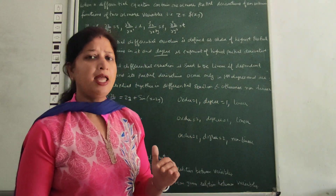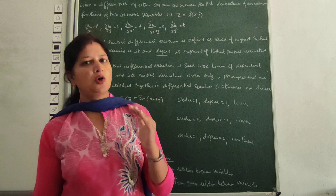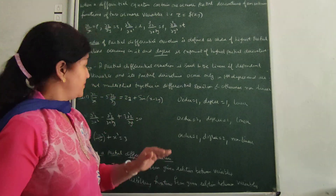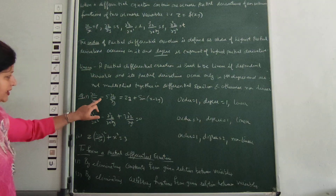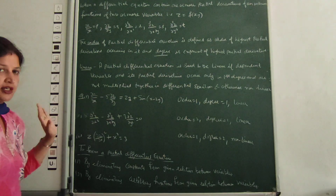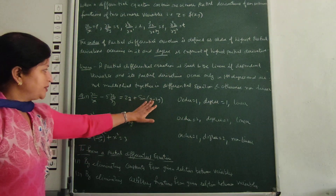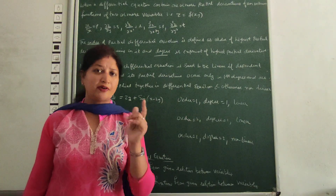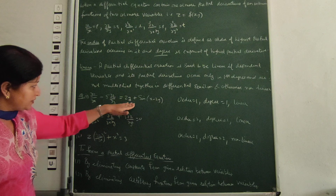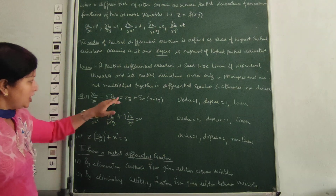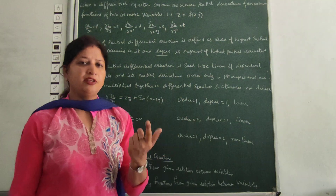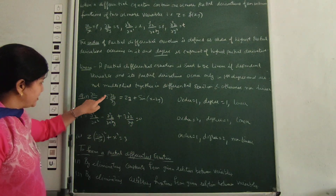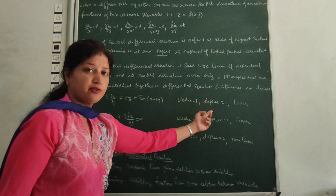Now we discuss an example — order, degree, and linearity. The equation we have is: curly z by curly x minus 5 times curly z by curly x equals 2z sin(x) minus 2x. We look at the highest derivative throughout the equation. So this is a first order derivative, meaning the order is 1.